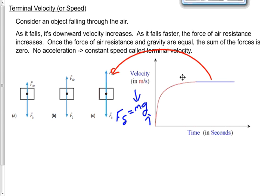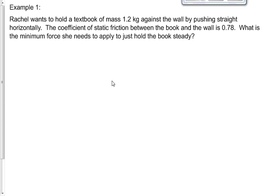Okay, so those are the two kinds of resistive forces we want to talk about: friction and fluid drag. Let's take a look at a couple of examples. Here's one: Rachel wants to hold a textbook of mass 1.2 kilograms against the wall by pushing straight horizontally. If we imagine a side view, here's the wall, and then I've got this object here - the textbook with mass 1.2 kilograms. Rachel wants to push in this direction, FR for force of Rachel, to hold that book up there.